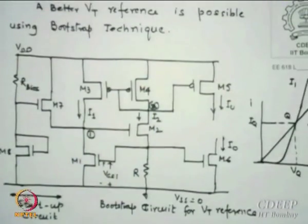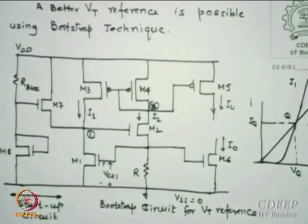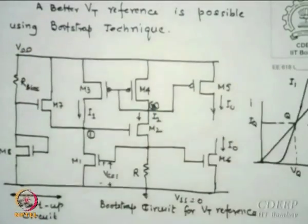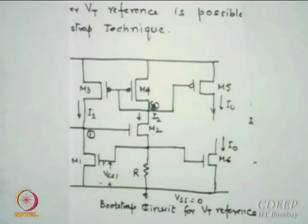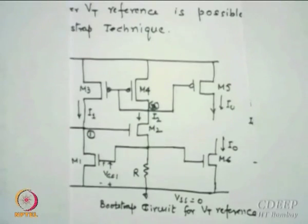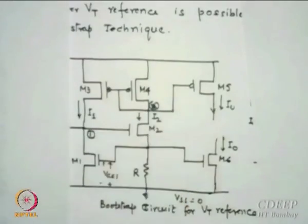Now here is a better reference called bootstrap. A bootstrap is named because some voltage levels are actually pulled up. This circuit is not very different from the threshold reference we have done. M3 and M4 are identical and connected in diode form. So M3 mirrors M4 currents - if sizes are the same, I1 and I2 will be equal, and the current is mirrored.